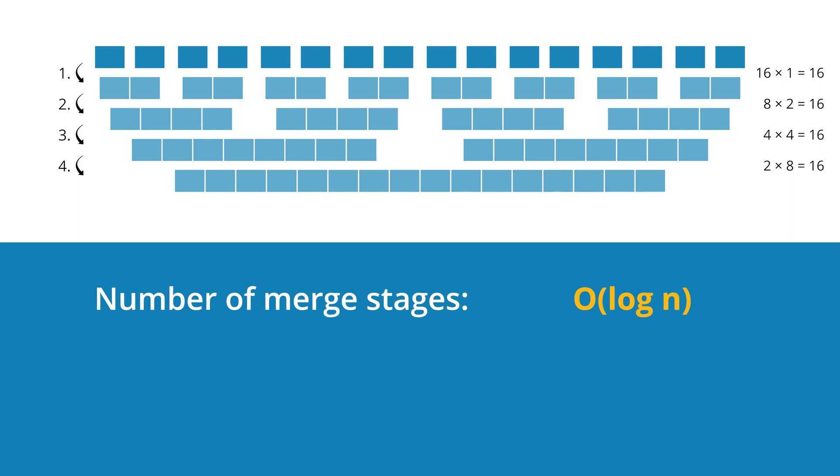Since the two lists to be merged are already sorted, both must be traversed exactly once. Accordingly, the cost is proportional to the number of elements merged. The number of elements per merged stage is n. Accordingly, the cost per merged stage is order n.